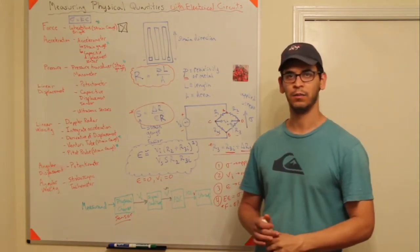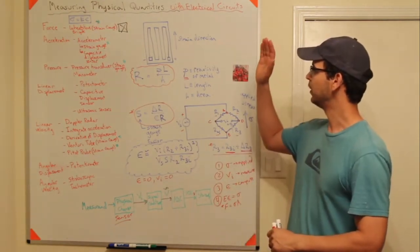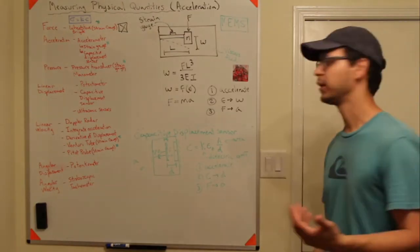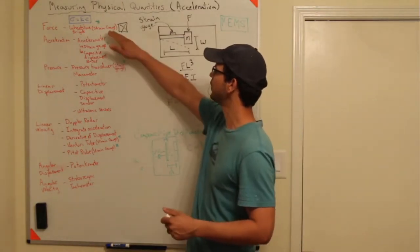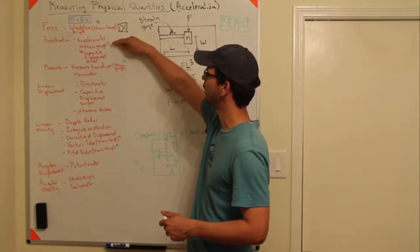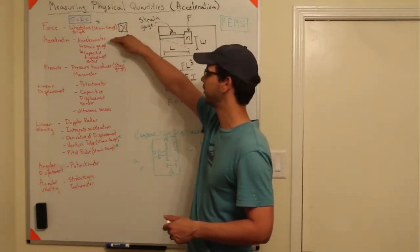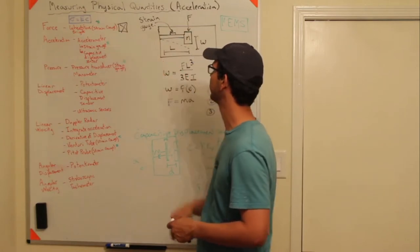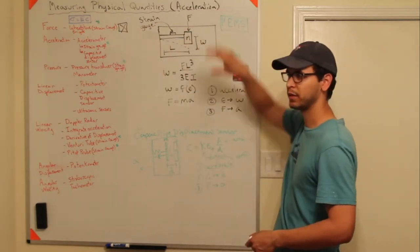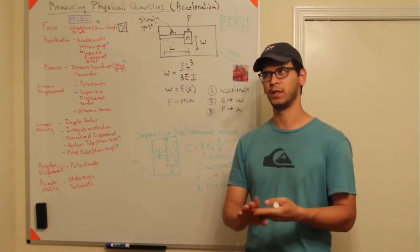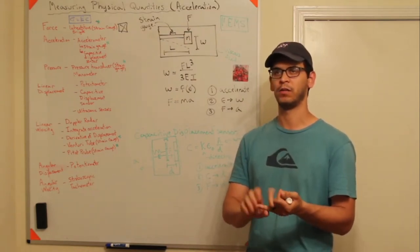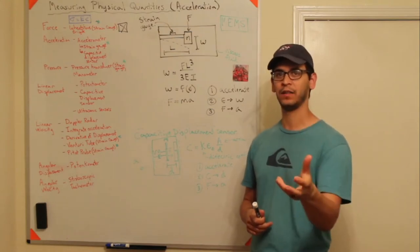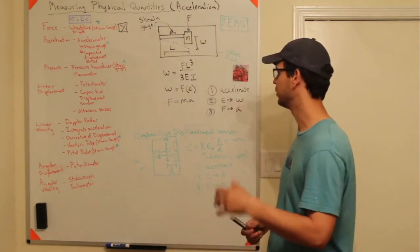Now let's talk about acceleration. I just talked about the strain gauge, and we're going to cover how to use a strain gauge in an accelerometer and also how to use a capacitive displacement sensor in an accelerometer. I'm going to be talking about MEMS accelerometers — MEMS stands for Microelectronics Measurement System — which are very small sensors.